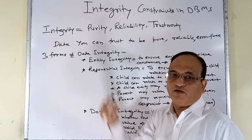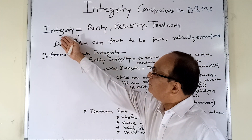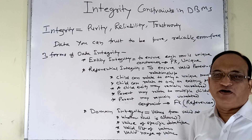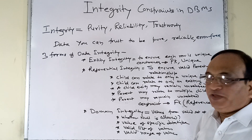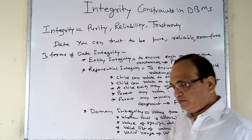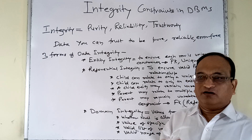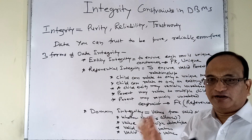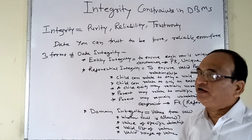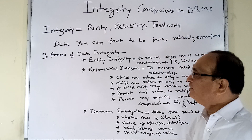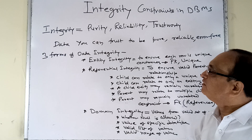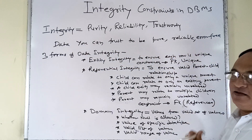We will first understand the meaning of the term integrity. Integrity means purity. We are very much concerned about the purity of the data — no data should be impaired. We are concerned with the reliability of the data, meaning when data is stored in the database, we have trust that the data reflects the true facts of real life. So integrity in the context of a database system means trustworthiness, purity, reliability — data you can trust to be pure, reliable, and error-free.